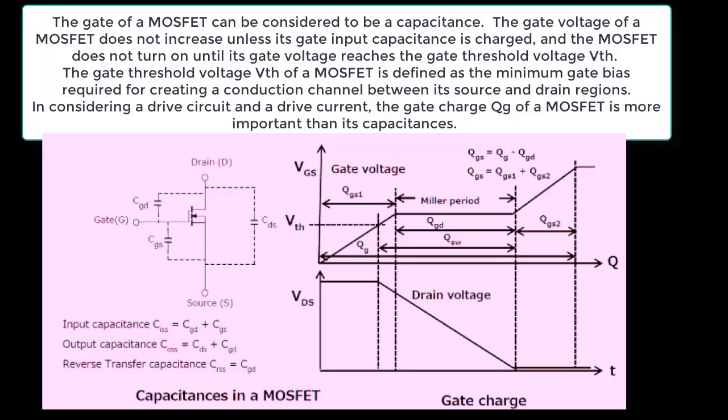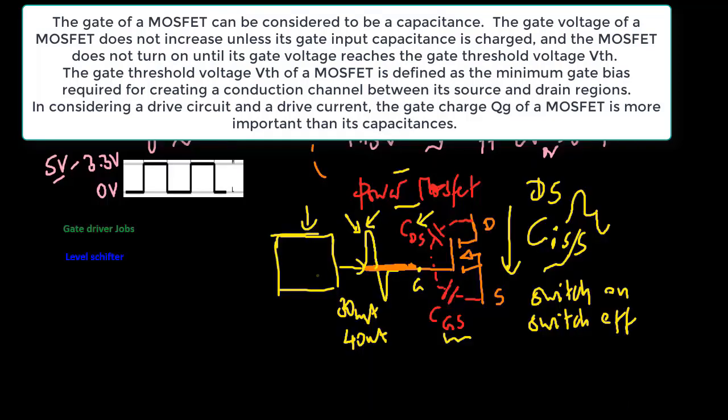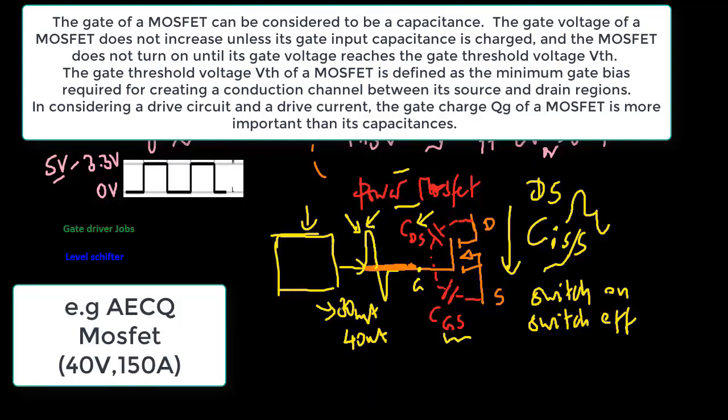The gate of a MOSFET can be considered to be a capacitance. The gate voltage of a MOSFET does not increase unless its gate input capacitance is charged, and the MOSFET does not turn on until its gate voltage reaches the gate threshold voltage. The gate threshold voltage of a MOSFET is defined as the minimum gate bias required for creating a conduction channel between its source and drain regions. In considering a drive circuit and a drive current, the gate charge of a MOSFET is more important than its capacitances.